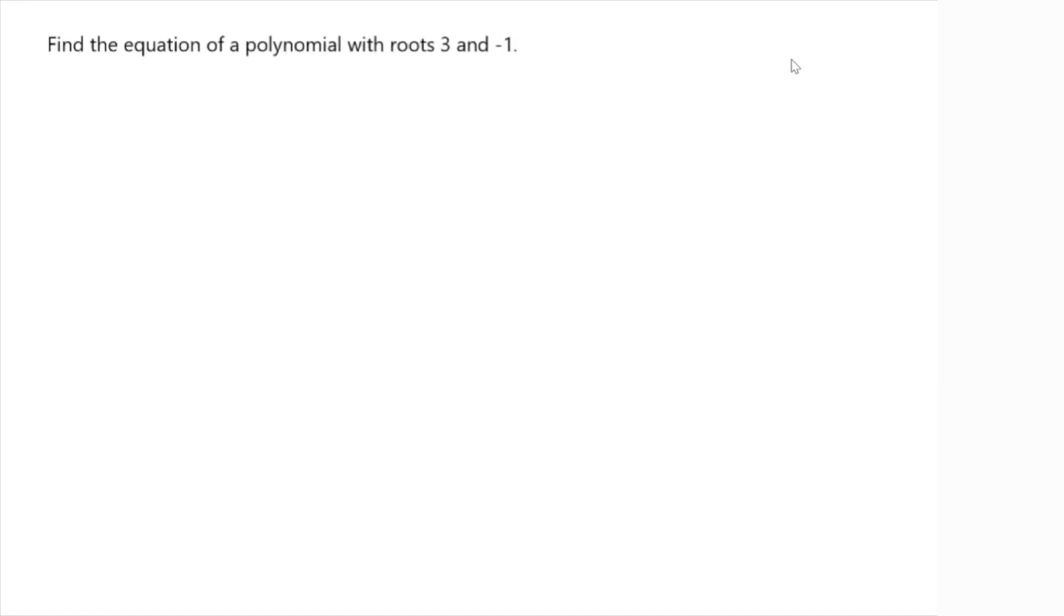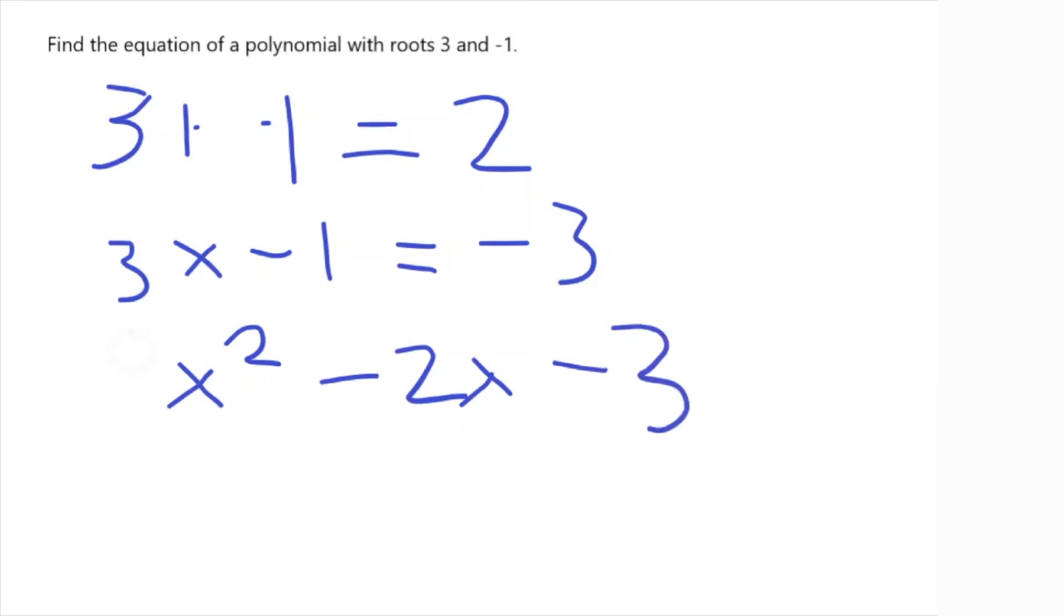So first note that there can be infinite amount of equations for a polynomial with these roots, but normally you want to try to find the most basic one. So using Vieta's, this common math prompt can actually be much more simple and take very few steps. We know that the sum of the roots is 3 plus negative 1, which is equal to 2, and then we know the product is just 3 times negative 1, which is equal to negative 3. So applying Vieta's, we know that the polynomial is x squared minus 2x minus 3, and that's your answer.